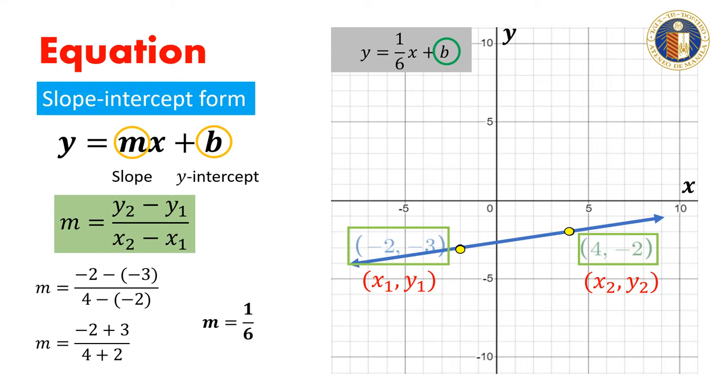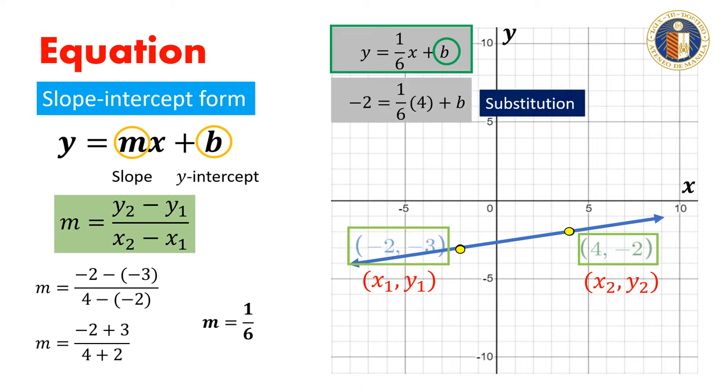We substitute -2 for y and 4 for x. We get -2 equals (1/6) times 4 plus b.